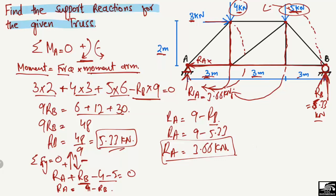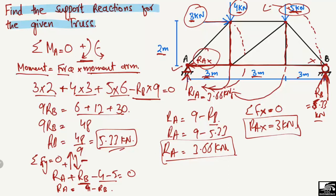To find the horizontal reaction RAX, this is straightforward because there is only one horizontal force acting on the truss, which is 3 kilonewtons, and only the hinge support can take the horizontal force — the roller support cannot. Using horizontal equilibrium, summation of horizontal forces equal to zero, RAX equals 3 kilonewtons.